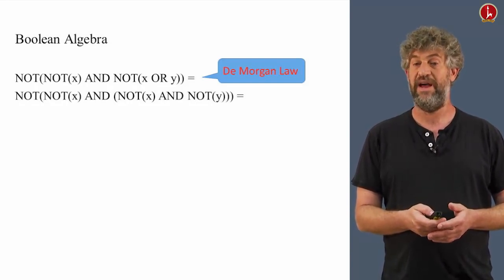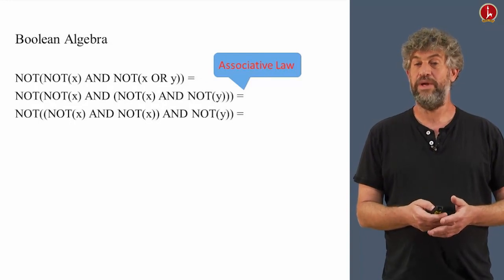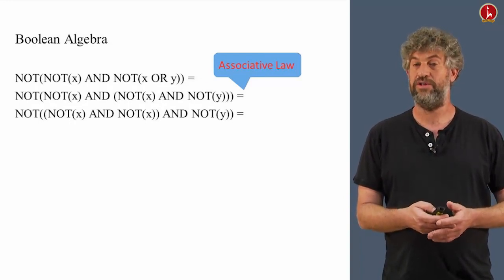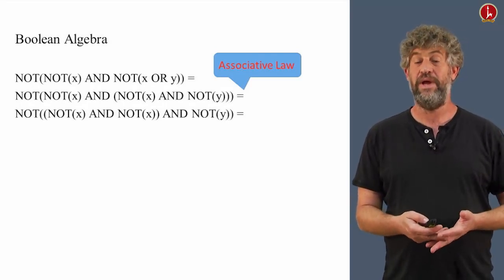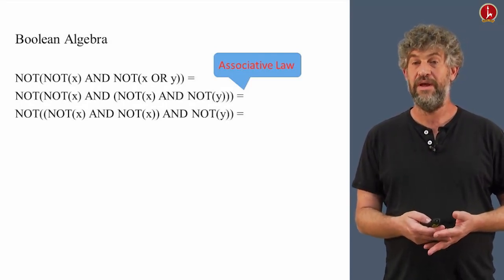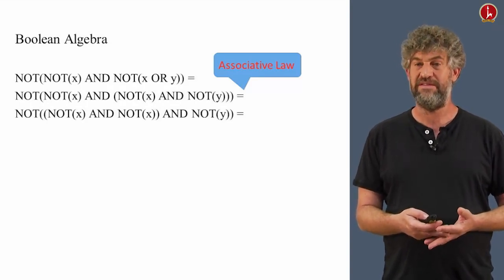And we get another expression which is identical using the associative law. At this point, we have something really interesting at the beginning. We have NOT(x) AND NOT(x). That can be just simplified to NOT(x). Why is that?